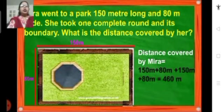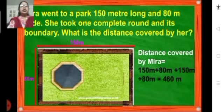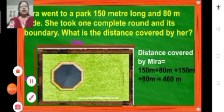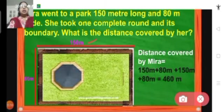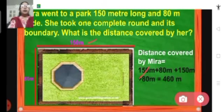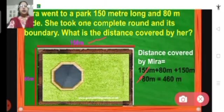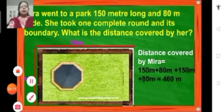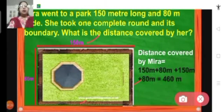One more example: Mira went to a park which is 150 meters long and 80 meters wide. She took one complete round around its boundary. What is the distance covered by her? The length is 150 meters and the breadth is 80 meters. She took one complete round, so we have to measure the four sides of the park. It is 150 plus 80 plus 150 plus 80 meters. This gives the perimeter of the park.